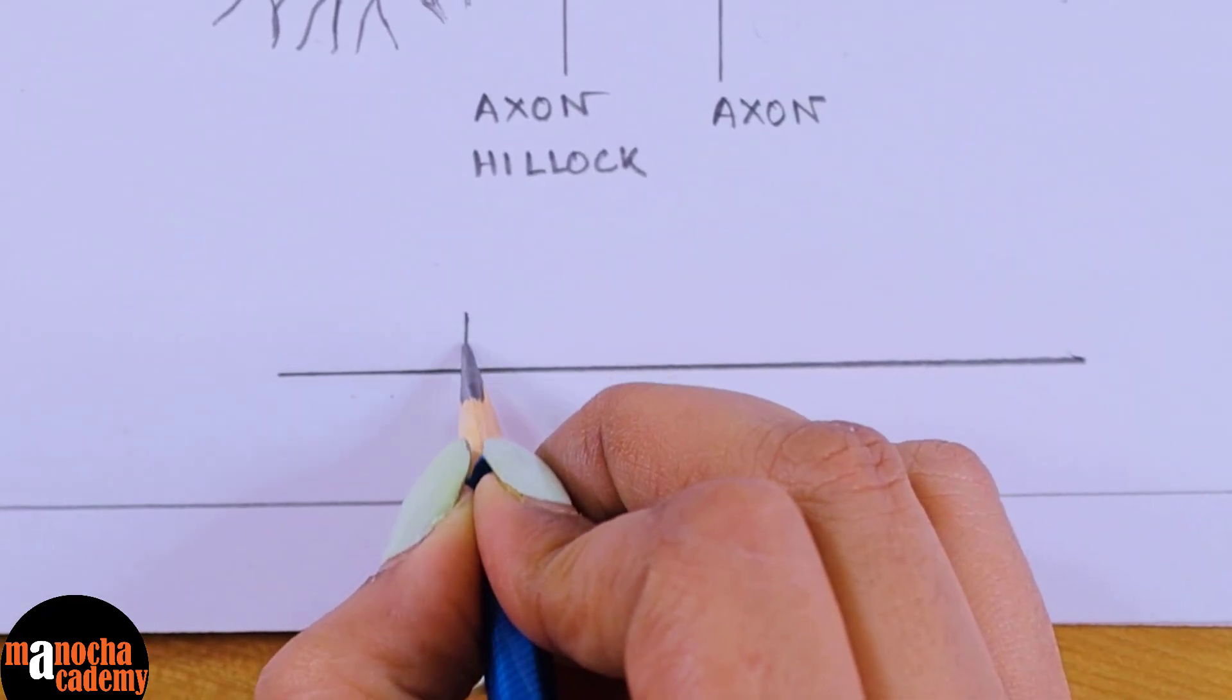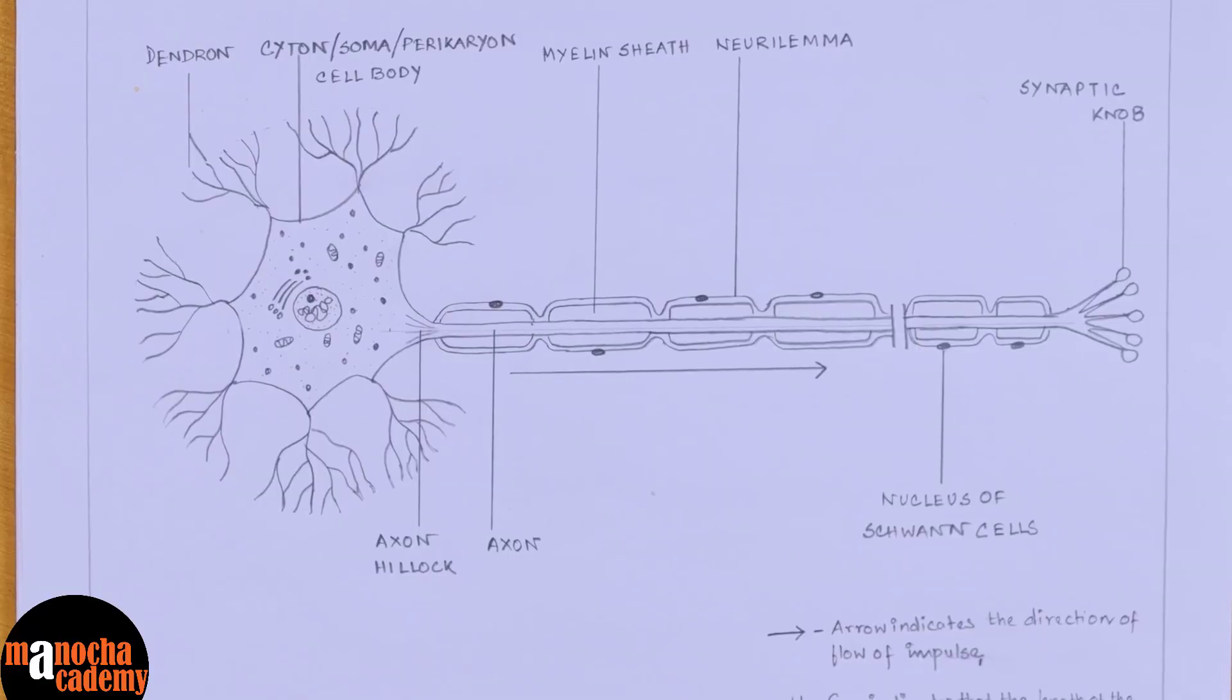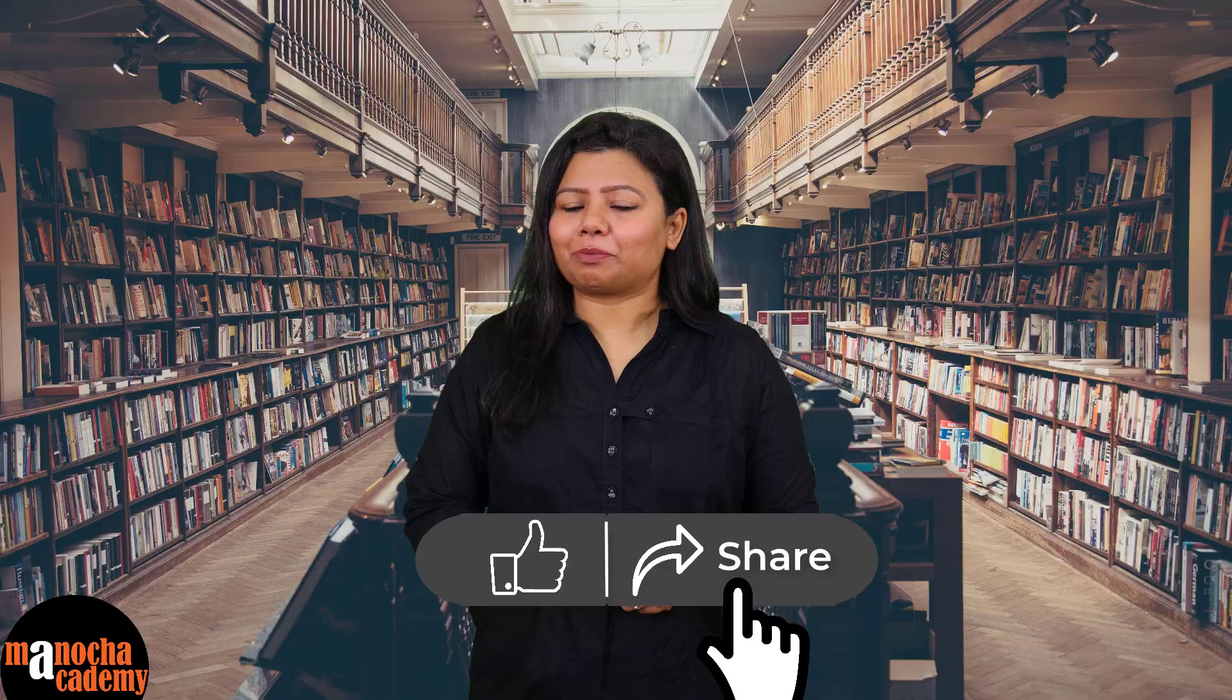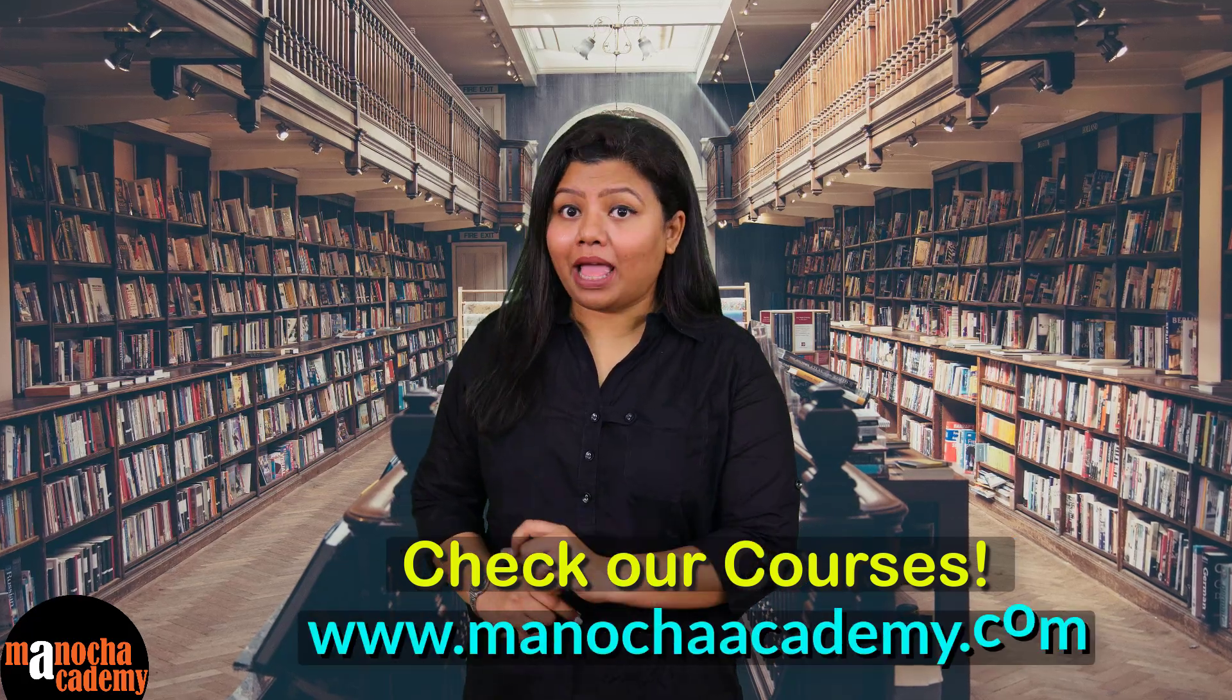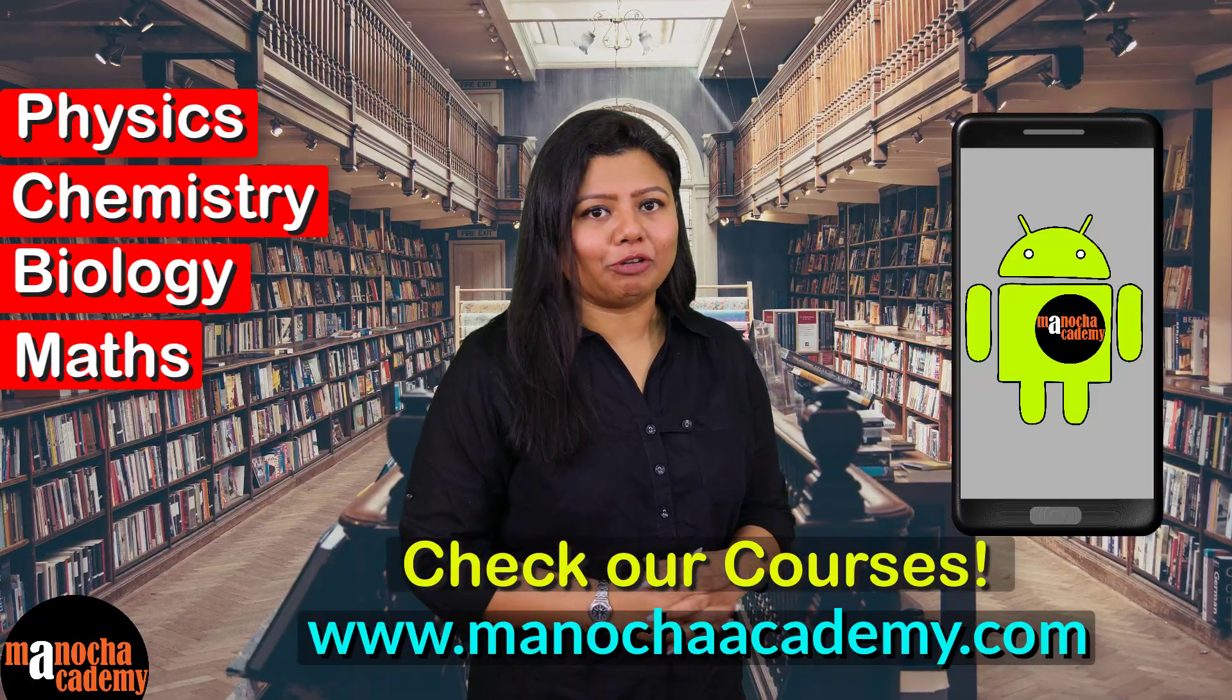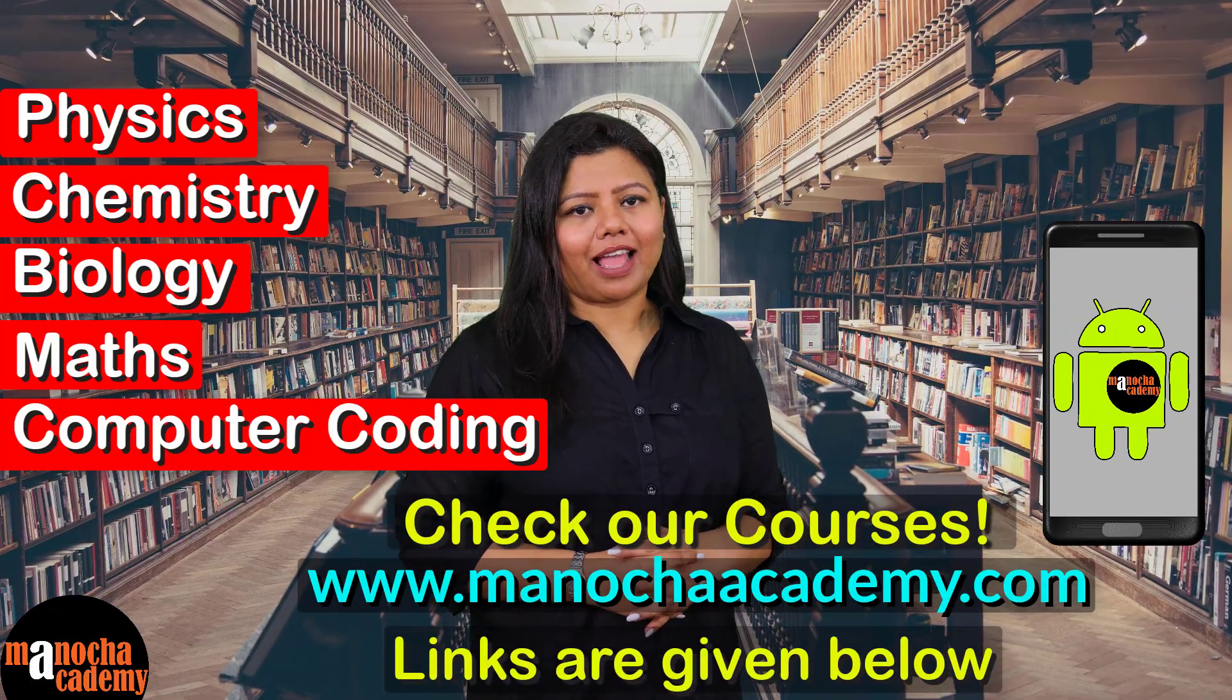We will also give a heading to our diagram where you will show what you have drawn. So this one is neuron. And this is how you draw a neat labeled diagram of the neuron. I hope after watching this video the diagram of the human neuron is very easy for you. Do hit the like button and share this video with your friends. Do not forget to subscribe to our YouTube channel for more such videos. Do check out the full courses on our website manoacademy.com and our Android app. We have courses for physics, chemistry, biology, mathematics, and computer coding. Links are given below. Stay connected with Manocha Academy and keep learning.